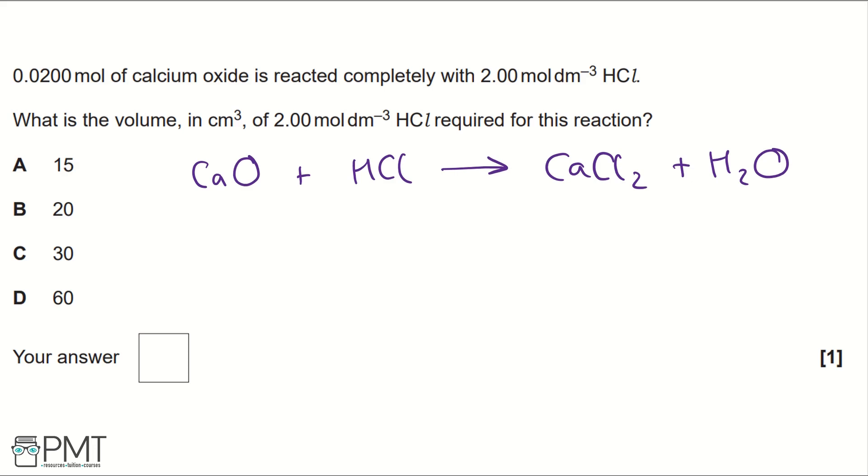If we balance the equation, we need a 2 in front of our hydrochloric acid to balance our hydrogens and our chlorines, because there are 2 used in our products.